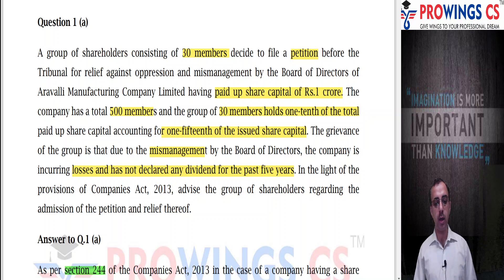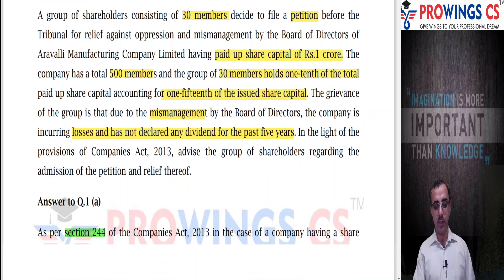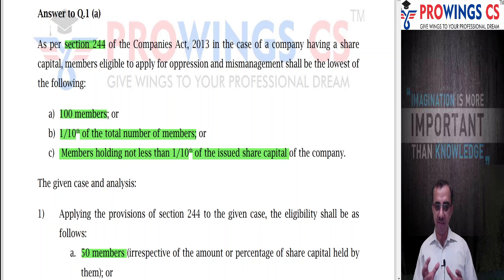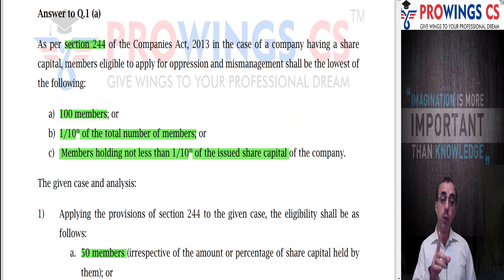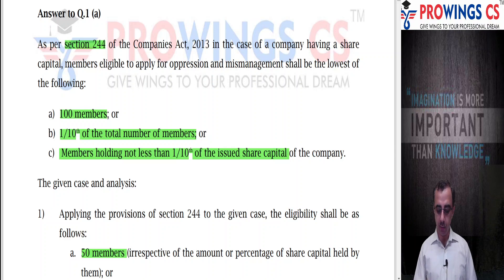Section 244 says that in case of a company having share capital, the members eligible to apply for oppression and mismanagement shall be the lowest of the following: 100 members, 1/10th of the total members, or members holding not less than 1/10th of the issued capital.